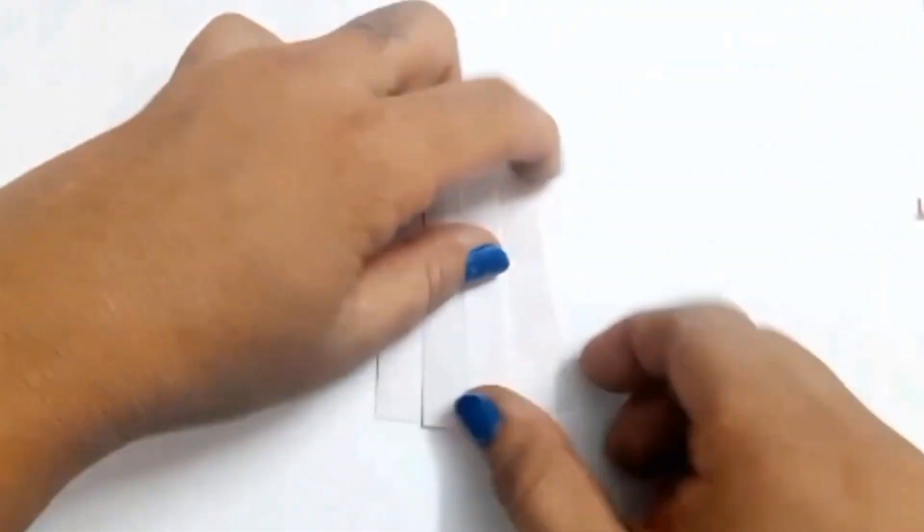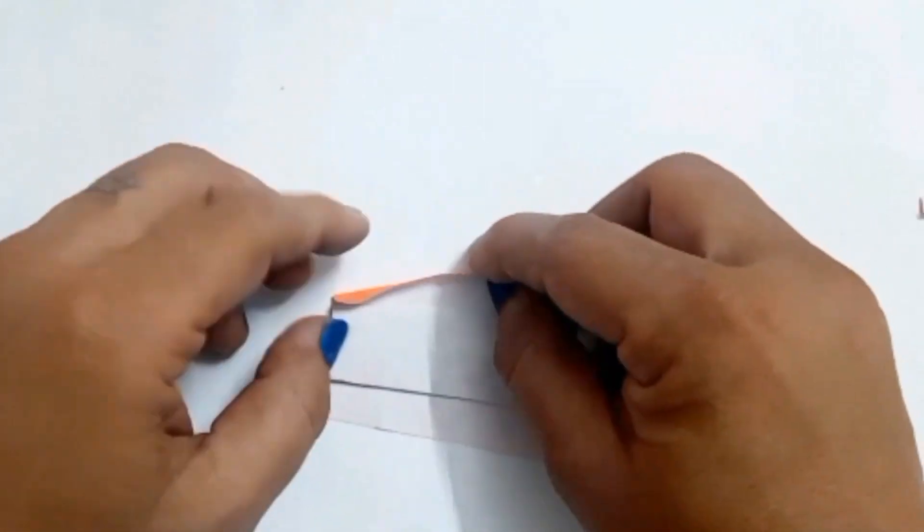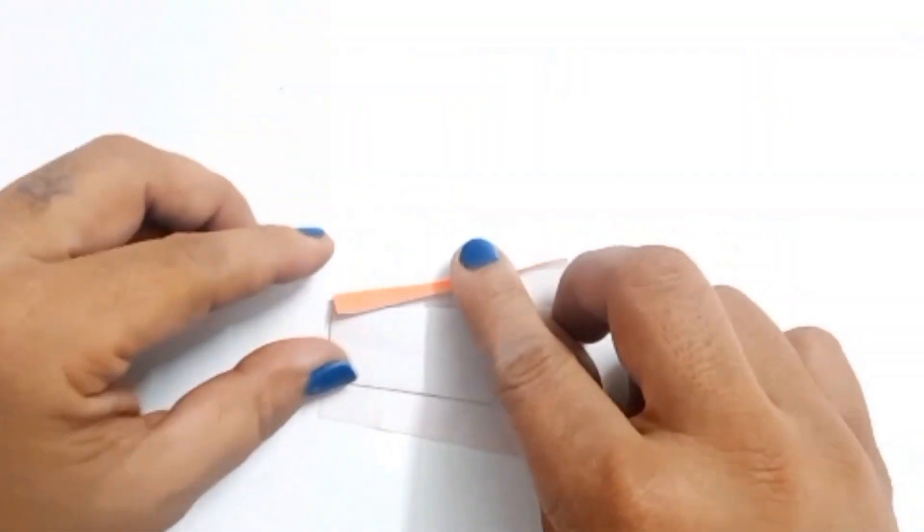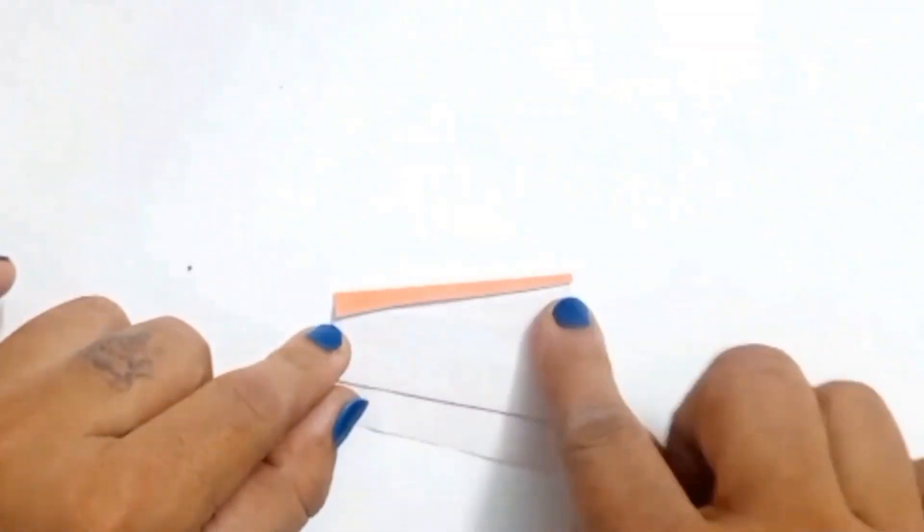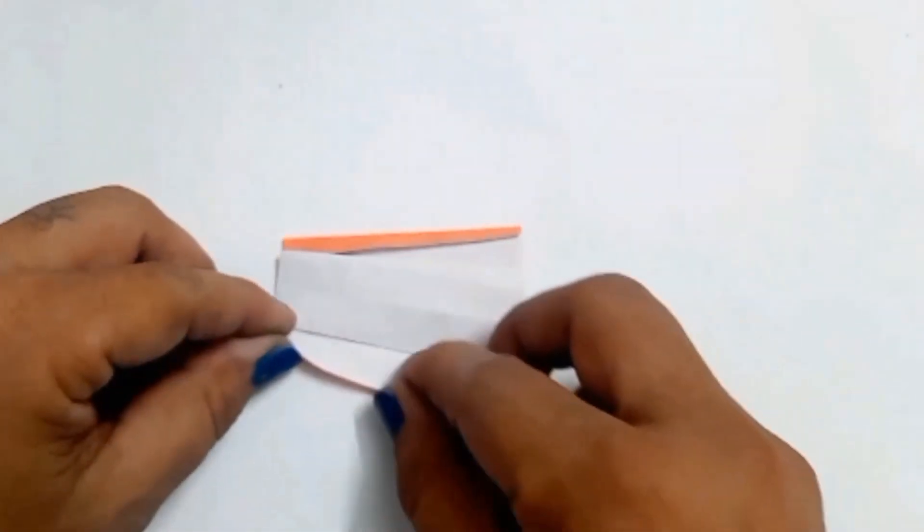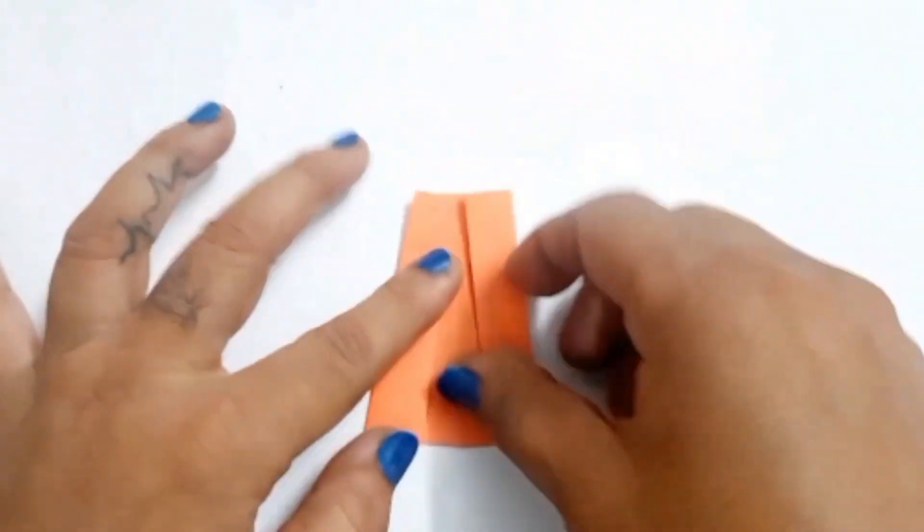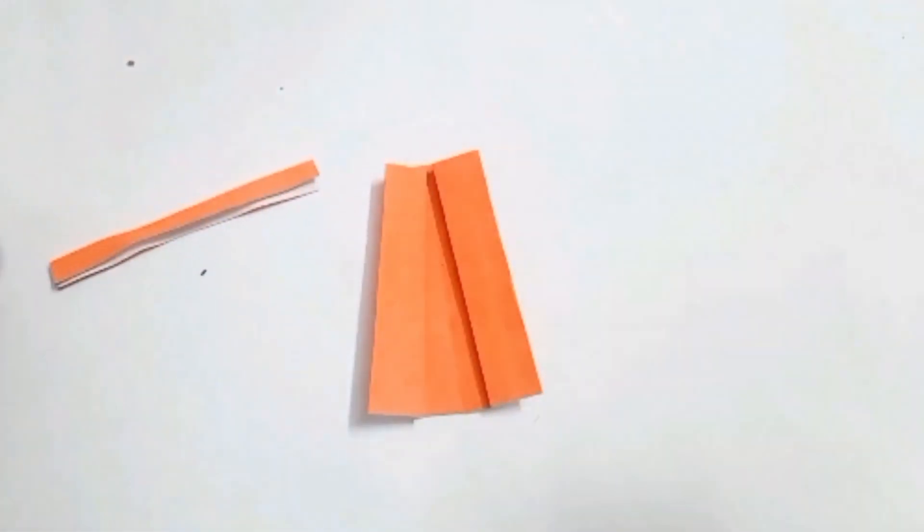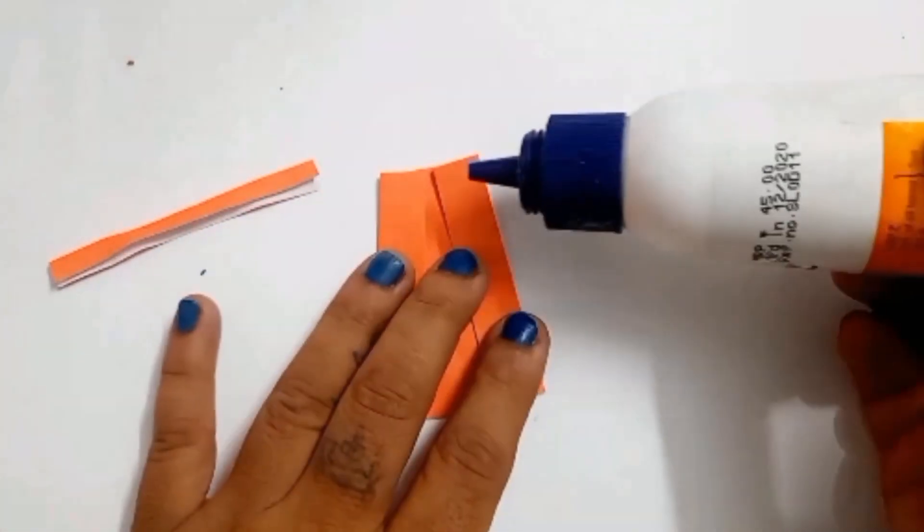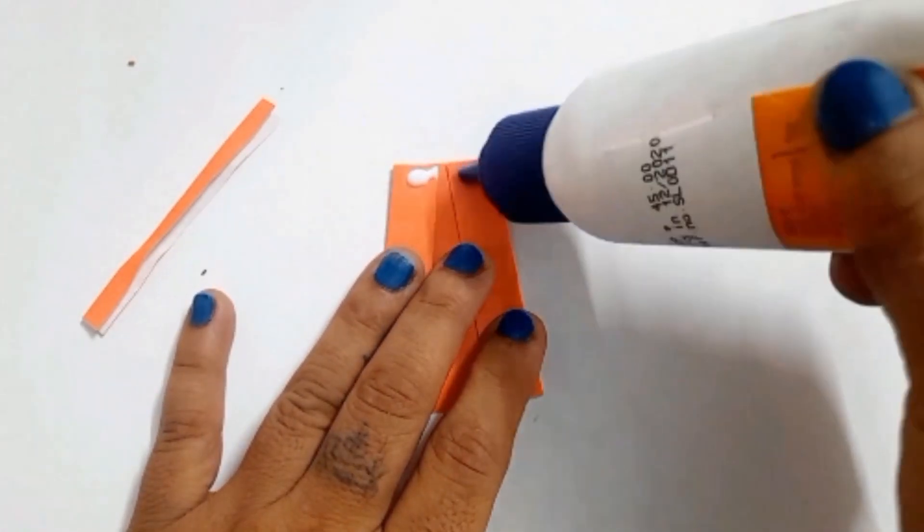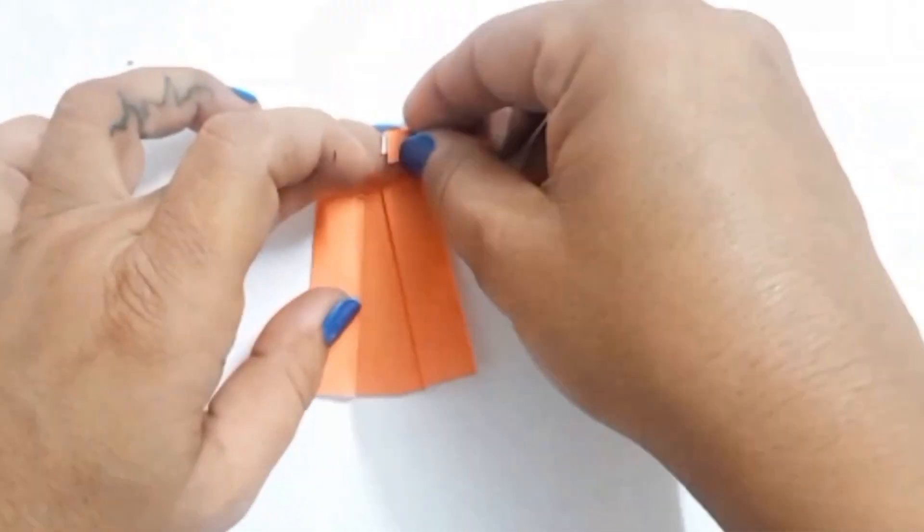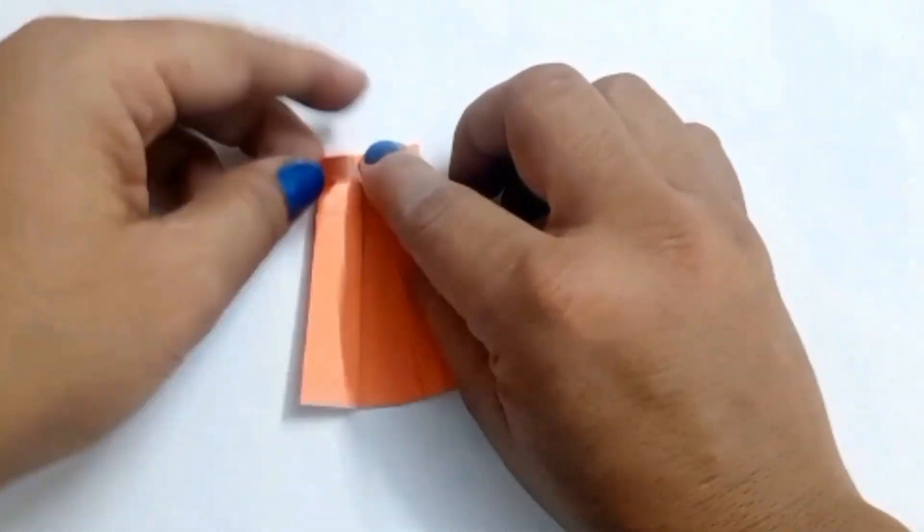Turn over and start folding the edges like this. Turn over and now take the strip of same colored paper and paste it on the top side of the skirt like this. Now you have pasted the belt. Your skirt is ready.